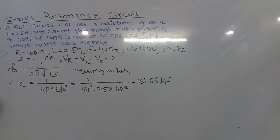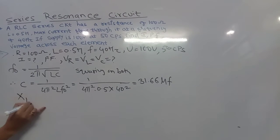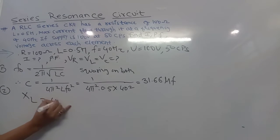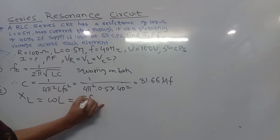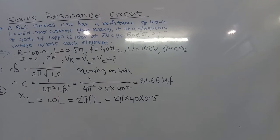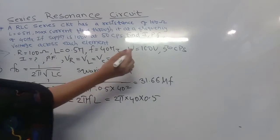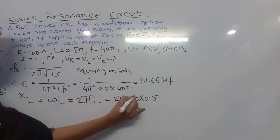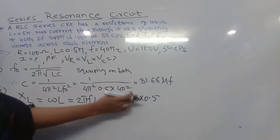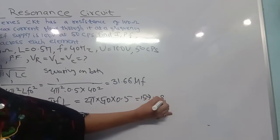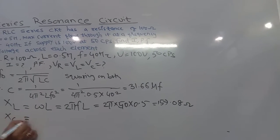The inductive reactance XL equals ω·L = 2πf·L. Using the supply frequency of 50 cycles per second: XL = 2π × 50 × 0.5 = 157.08 ohm.